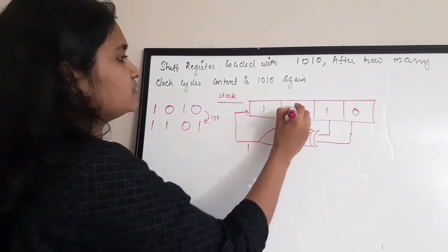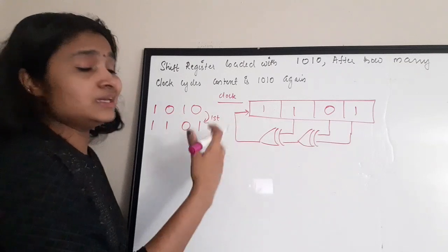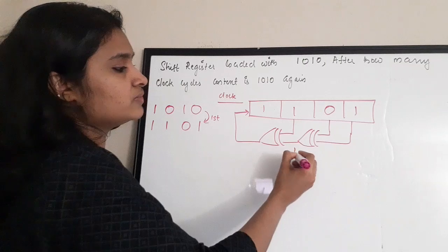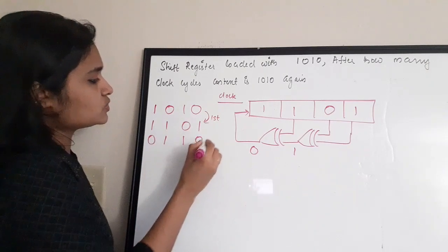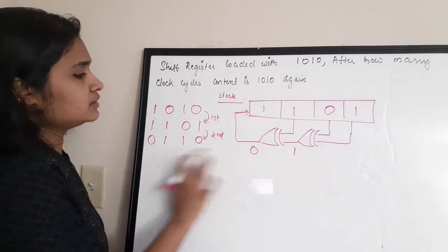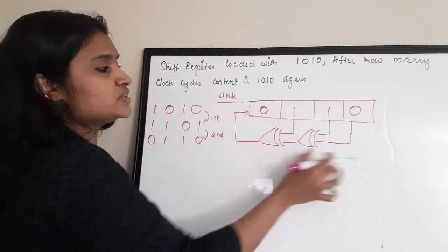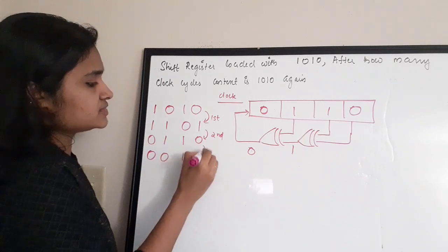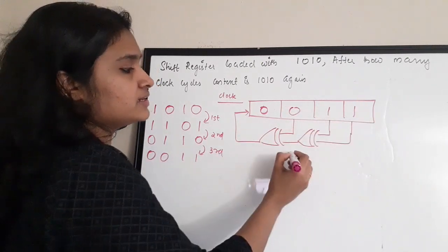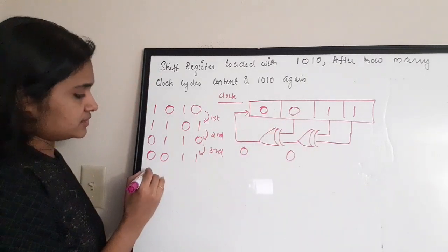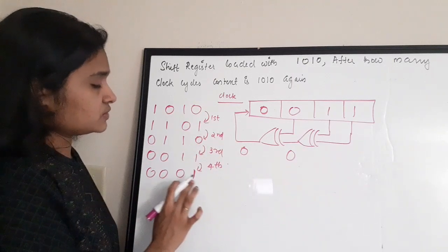Continuing: clock cycle 2 — XOR of 0 and 1 = 1, content becomes 0 1 1 0. Clock cycle 3 — XOR of 1 and 0 = 1, wait: XOR of last two bits (1,0) = 1? Recalculating: content is 0 1 1 0, XOR last two = 1 XOR 0 = 1 → 1 0 1 1. Clock cycle 3 gives 0 0 1 1, clock cycle 4 gives 0 0 0 1.